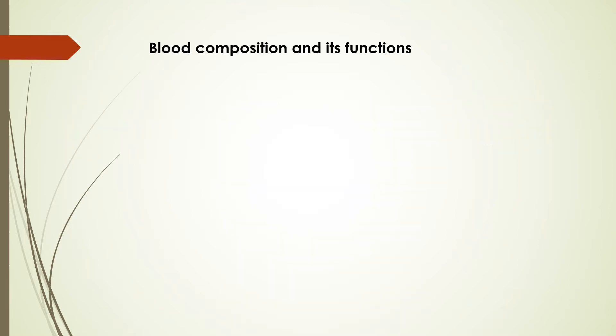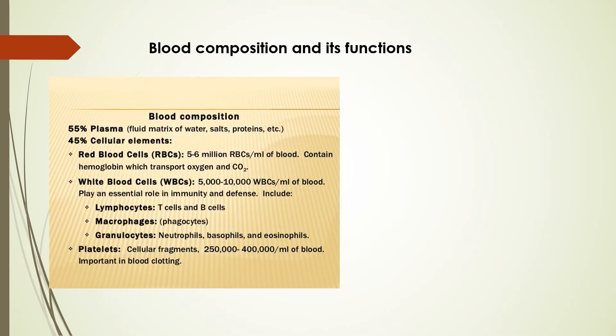Composition of blood and its function: blood is made up of plasma and blood cells. The percentage of plasma is 55% and blood cells make up 45%. Plasma is an important fluid present in the blood; it contains water, salts, protein and important proteins such as globulin and fibrinogen. Fibrinogen is one of the important proteins that helps in clotting of blood. Please remember: fibrinogen is an important protein present in the plasma of the blood that helps in clotting.